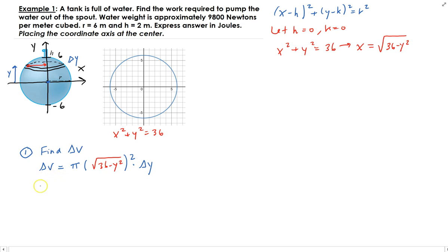So that is the incremental volume, and we can simplify this to give 36 minus y squared times delta y. All right, so now that we have the incremental volume, we can use the water weight to find the incremental force. So the incremental force would just be 9800 times this.